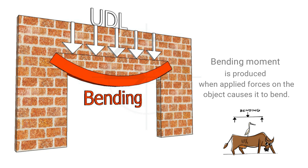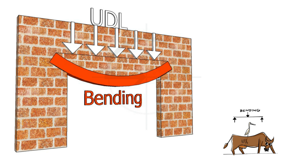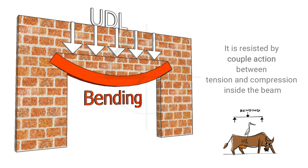Bending moment is produced when applied forces on the object causes it to bend. It is resisted by couple action between tension and compression inside the beam.